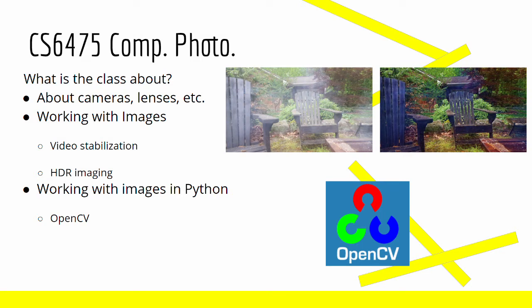Now talking about my first semester, of course you have to talk about the class I took: CS6475 Computational Photography. I've done a halfway review on this before, but I'll just review some of those points quickly. The class starts off talking about what cameras are, how they work, how lenses work, and how the physical components work. You do a lot of work with images, including video stabilization and working with HDR images, and a lot of work with image manipulation using Python, mainly using the OpenCV library.